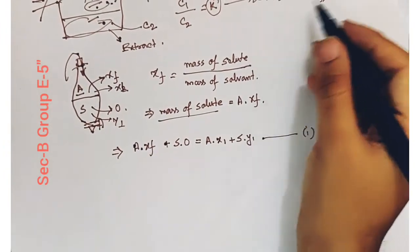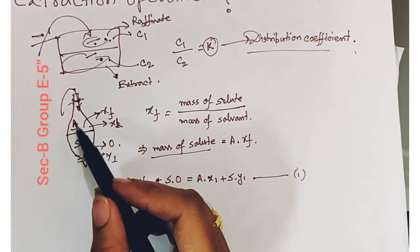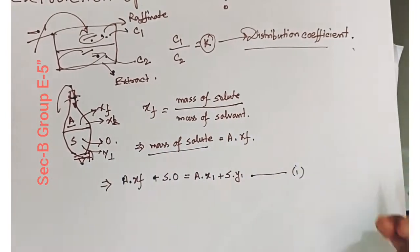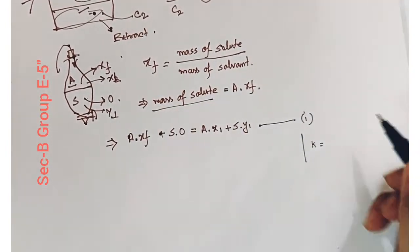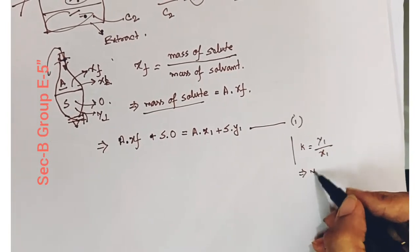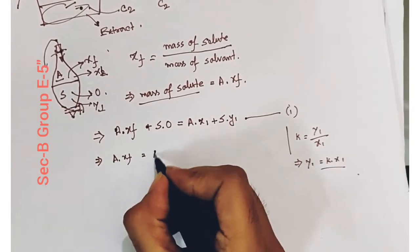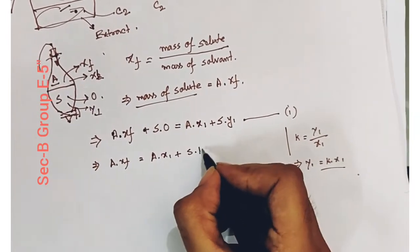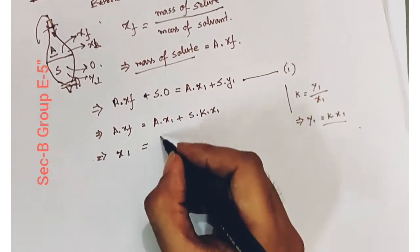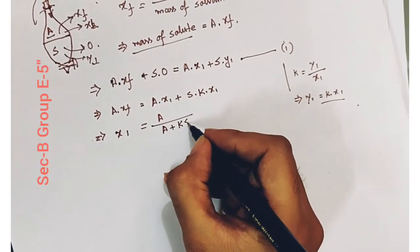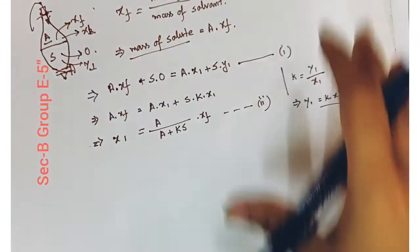Now applying the distribution coefficient: K equals Y1 divided by X1, so Y1 equals K·X1. Substituting into equation 1: A·XF = A·X1 + S·K·X1. From this we get X1 equal to A divided by (A + KS), multiplied by XF. This is equation number 2, and this all occurs in the first separating funnel.